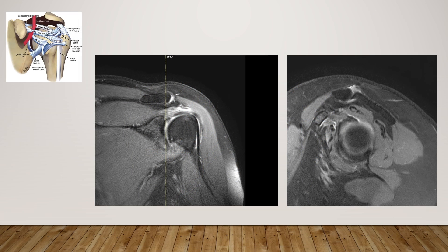The central part of the coracohumeral ligament is the area of attachment to the coracoid process. On the coronal image, it belongs to the medial to lateral edge of the coracoid process. On the sagittal image, the central coracohumeral ligament is located posterior-inferior to the coracoid process and anterior-superior to the glenoid.